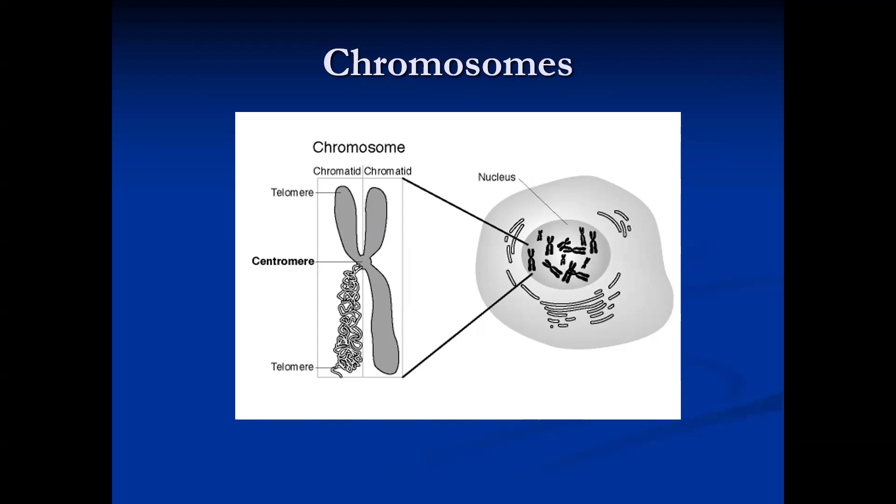The telomere is like a protective part of the DNA — it usually protects the DNA. If there is wearing and tearing of the telomere, aging will likely occur. Scientists are now working on reversing aging through telomere technology, and I will do a separate video on that.